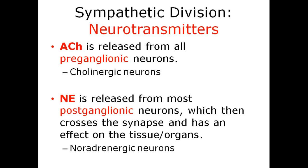Regarding sympathetic division neurotransmitters: acetylcholine (ACH) is released from all preganglionic neurons; therefore, all preganglionic neurons are cholinergic. Norepinephrine is released from most postganglionic neurons, which then crosses the synapse and has an effect on the tissue or organs. These are known as noradrenergic neurons.